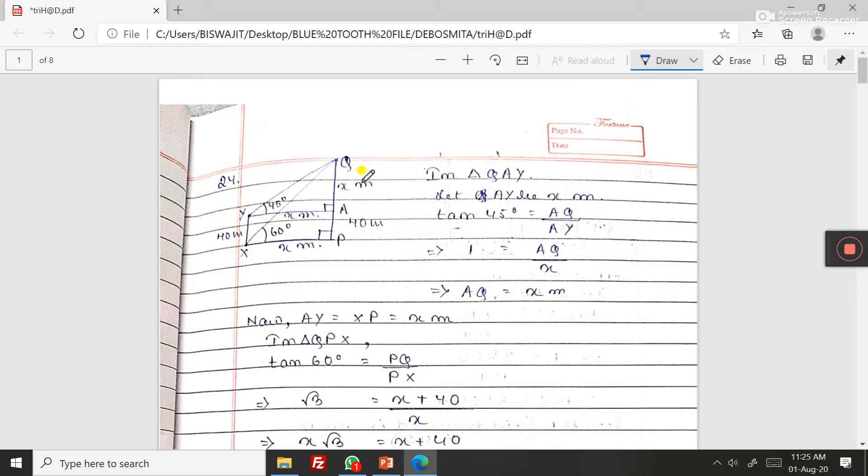From a point capital X on the ground is 60 degrees. Here is the capital X, the angle of elevation is 60 degrees. At a point Y, 40 meters vertically above, so this is 40 meters vertically above, the point is Y.